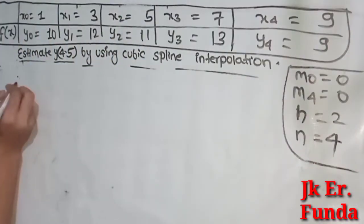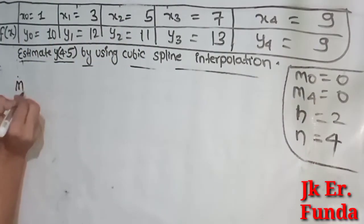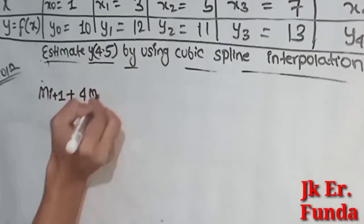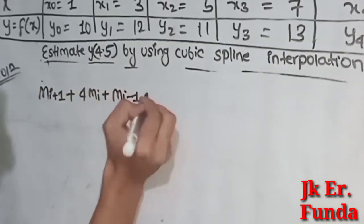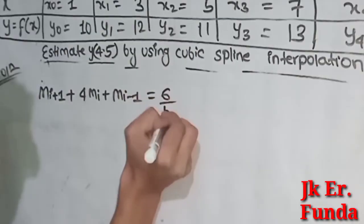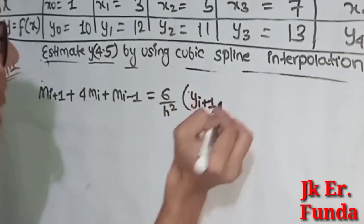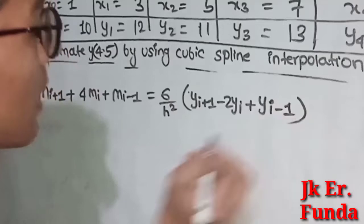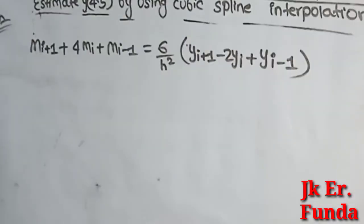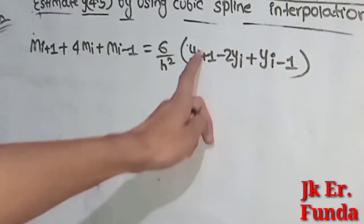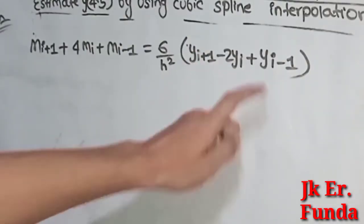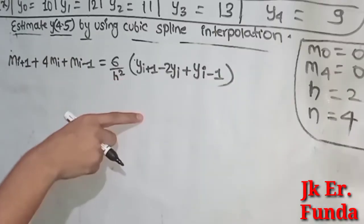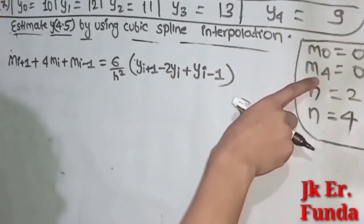We have the formula: M_i+1 plus 4M_i plus M_i-1 equals 6 divided by h squared, times (y_i+1 minus 2y_i plus y_i-1). Here i runs from 1 to 3, and the boundary conditions are M_0 equals 0 and M_4 equals 0.